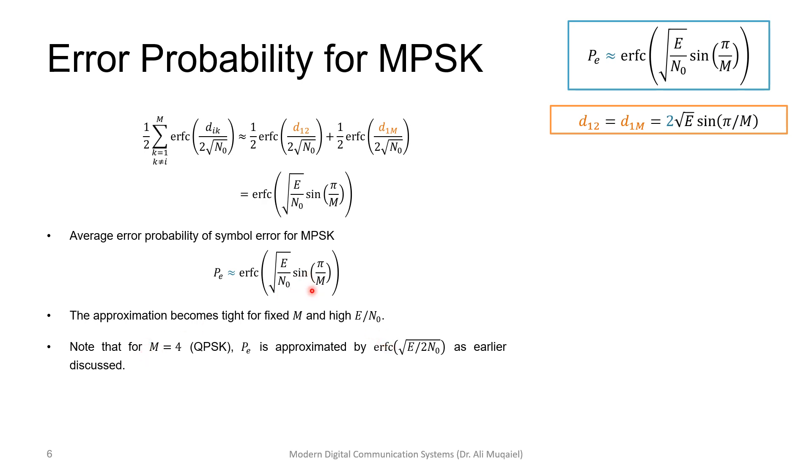If you put sine pi over 4, it is one over square root of 2, and this expression will become the same expression we had before. This is kind of a check that we have done things correctly.